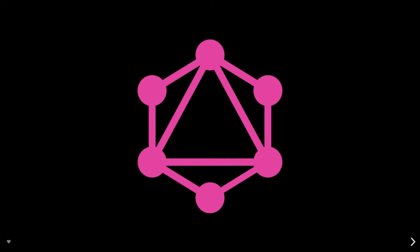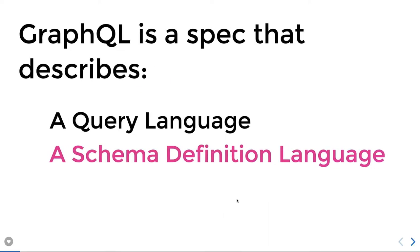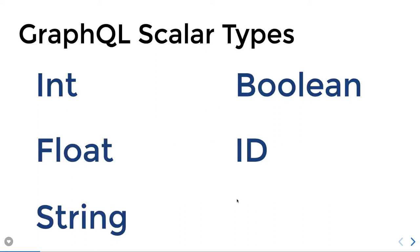Welcome back. In this video we are going to talk about Schema Definition Language. We have already seen what kind of queries and mutations we are going to write. We will also understand the SDL — what it is about — because we have three things: queries, mutations, and types. These combine to create a schema, and then we have resolvers. Here we are talking about types, which we define with the help of SDL.